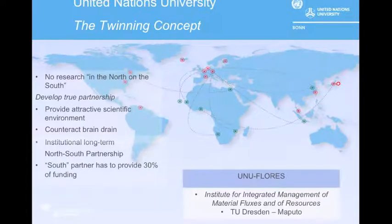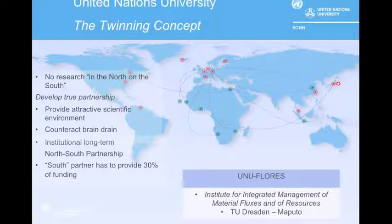Realizing the issue regarding the unequal distribution of UNU system organizations, there has become a push to create twin institutes. The concept is to have two institutes—one located in a resource-rich region and another in a region that is still developing its capacities—working on the same topic. For example, UNU-Flores, the Institute for Integrated Management of Material Fluxes and Resources, with one campus in Maputo and the other in Dresden.